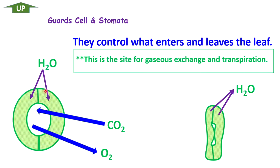The guard cells can be open or closed. They can open wide to create an open stomata, or close together to create a closed stomata. When the guard cells take in water by osmosis from neighboring cells, the guard cells become turgid and the stomata will be open. If water has been evaporated from the guard cells — such as in high temperatures — then the guard cells will become flaccid and the stomata will be closed. So water going into the guard cells opens the stomata; water leaving the guard cells causes them to become flaccid and the stomata closes.